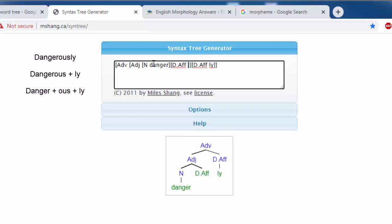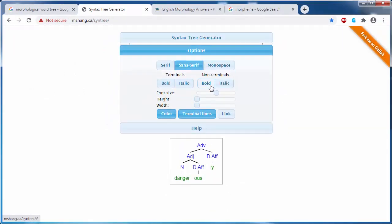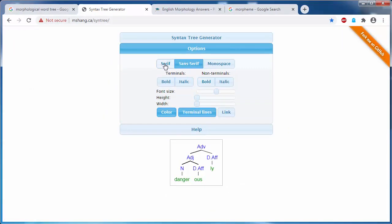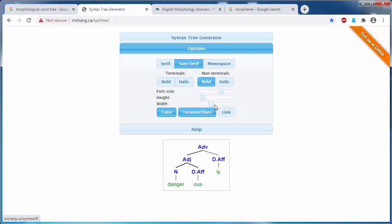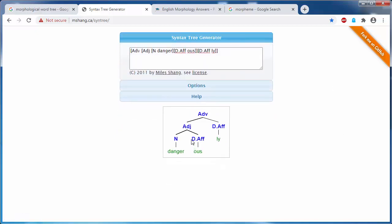Now this is our final word tree. We can change the font type, font style, font size, the height of our tree, and width. You can do as you want. Now we've finished our tree.